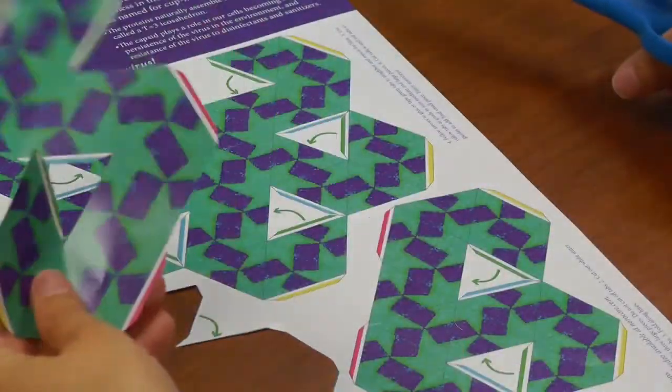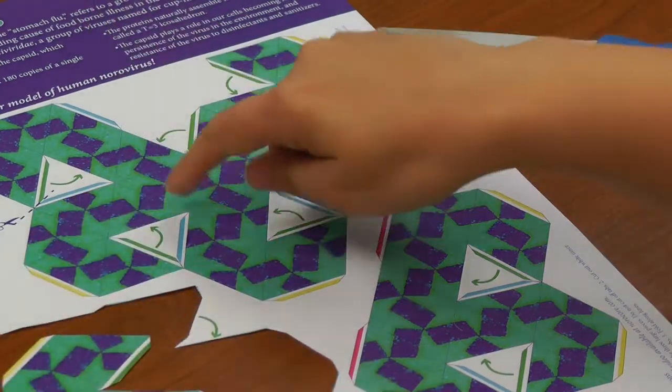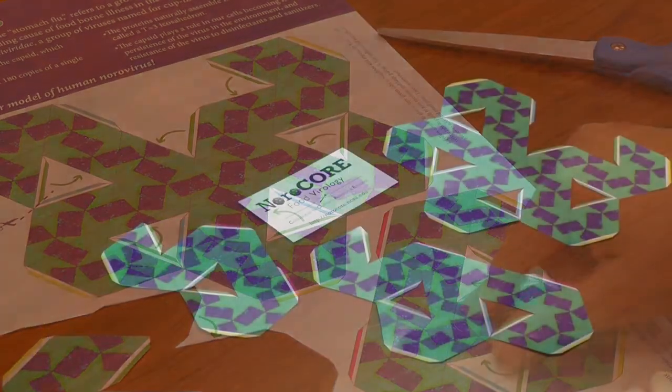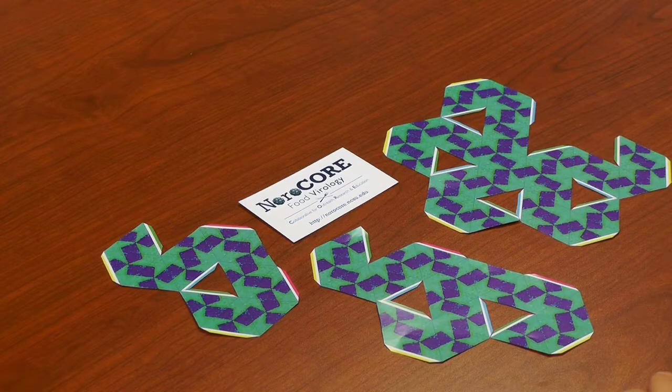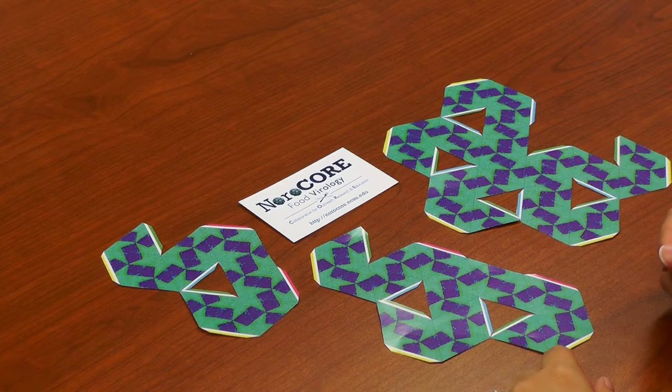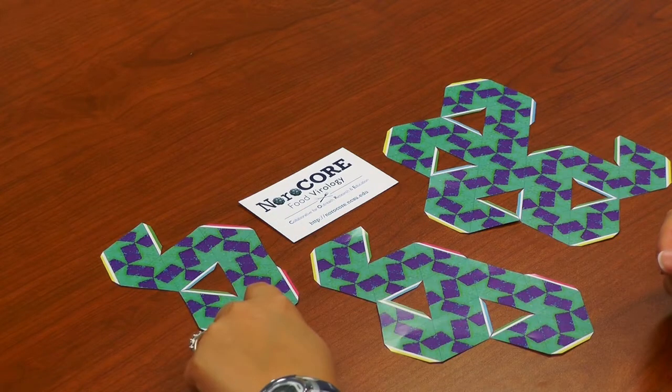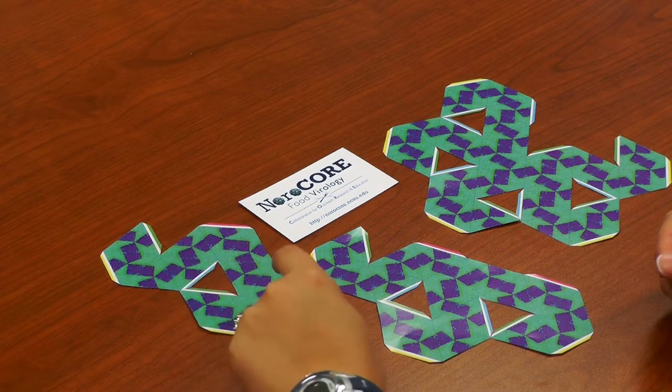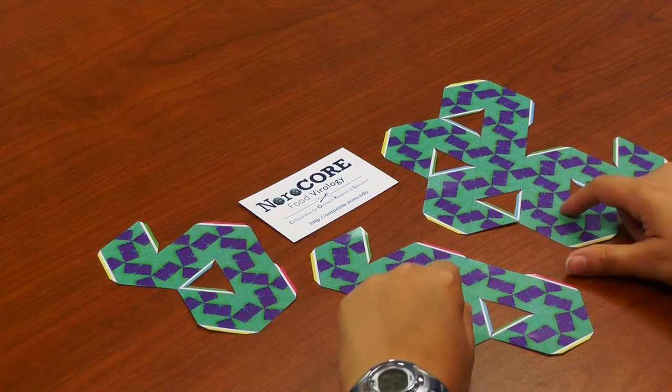All right, so now you've seen how to do this first piece. You'll go through and cut out the other two pieces just like it. Through the magic of cinematography, we now have our three pieces cut out. The next part is folding, and I'm going to demonstrate on the smallest piece, but again you're going to fold everything the same way for the other two pieces.